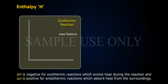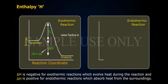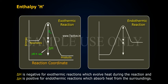Delta H is negative for exothermic reactions which evolve heat during the reaction, and delta H is positive for endothermic reactions which absorb heat from the surroundings.